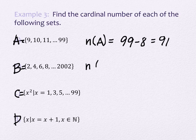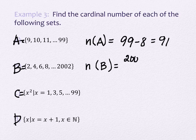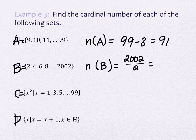The number of items in set B: it goes 2, 4, 6, 8 up to 2,002. We need to divide by 2 because it's counting by 2s. So that's 2,002 divided by 2, which is 1,001.